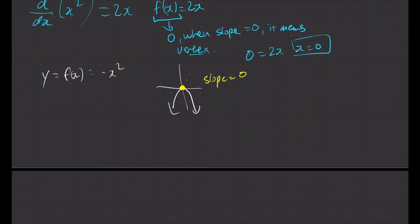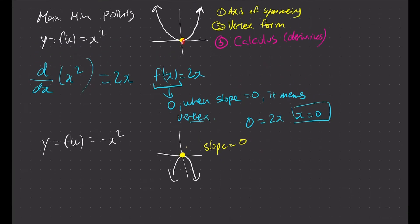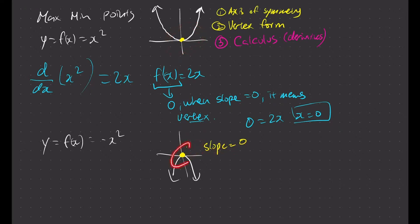So let's assume we do not see our original function. We just know that when we have the slope equal to zero, is it actually the maximum or the minimum? We don't really know. So now, how do we figure out whether it's going to be a maximum point or a minimum point?